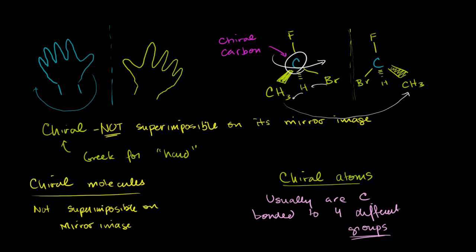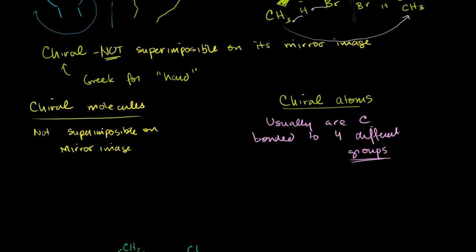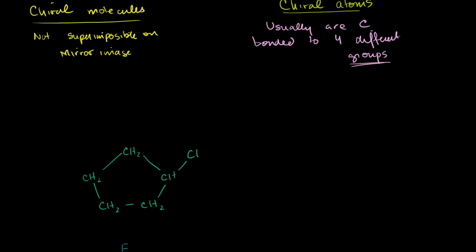In the last video, we learned a little bit about what a chiral molecule, a chiral carbon, or a chiral atom is. What I want to do in this video is go through a bunch of examples and see if we can identify if there are any chiral atoms, and also see if we're dealing with a chiral molecule. So let's look at our examples here.